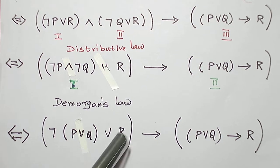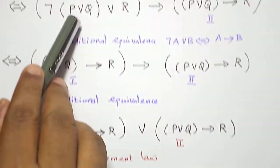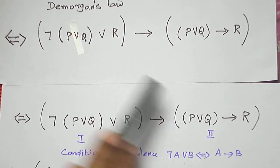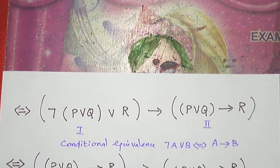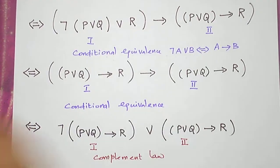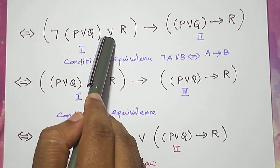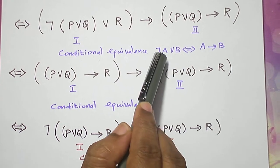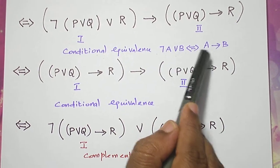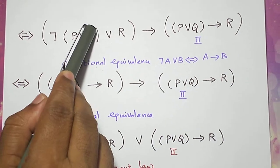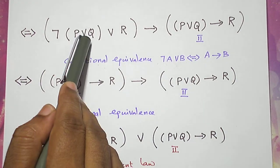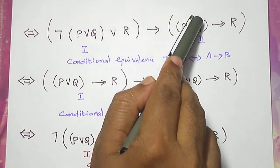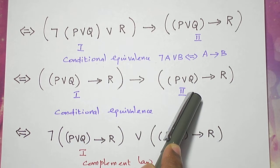Now I am going to simplify this term again. Let me rewrite the statement formula as it was in the previous step. This is the first term and this is the second term. The OR connective is going to be replaced by a conditional connective using the conditional equivalence: negation A or B is equivalent to A conditional B. The remaining term is kept undisturbed.